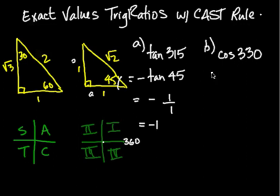Second one: cosine of 330. So the first thing I'm doing is looking at what's the related angle to 330 degrees in the first quadrant, and that is 30 degrees.